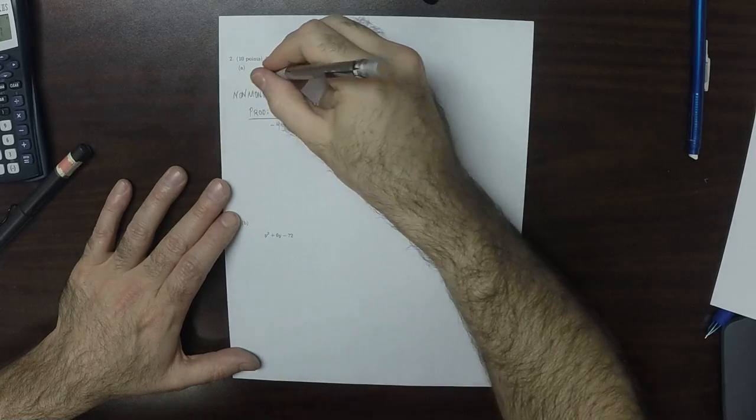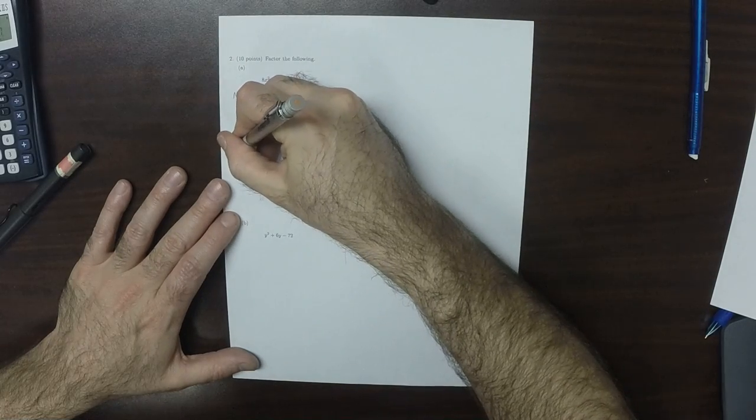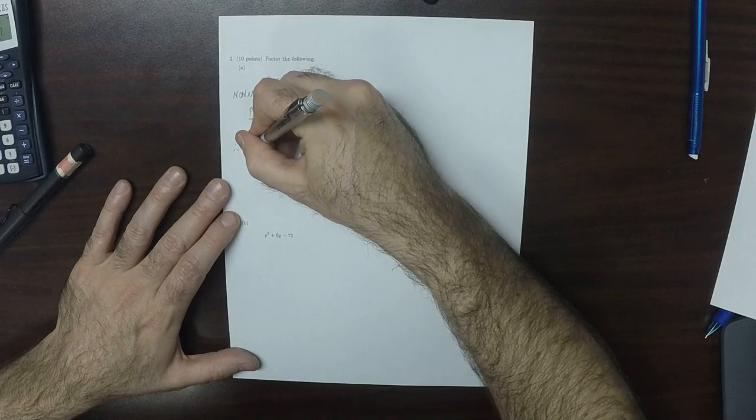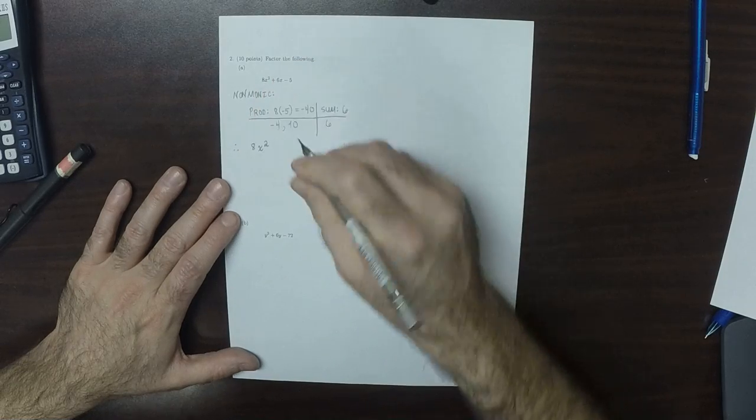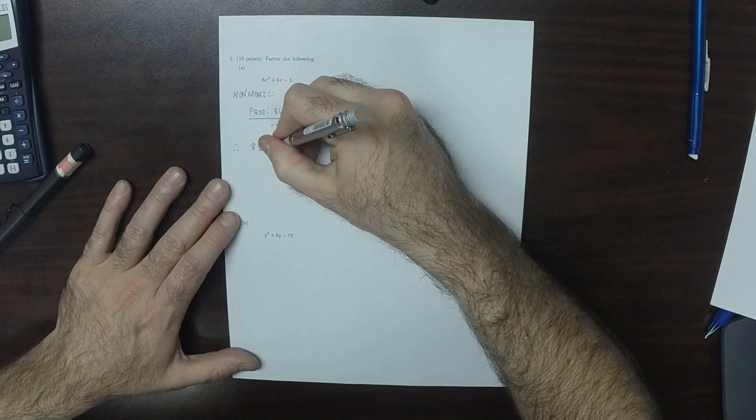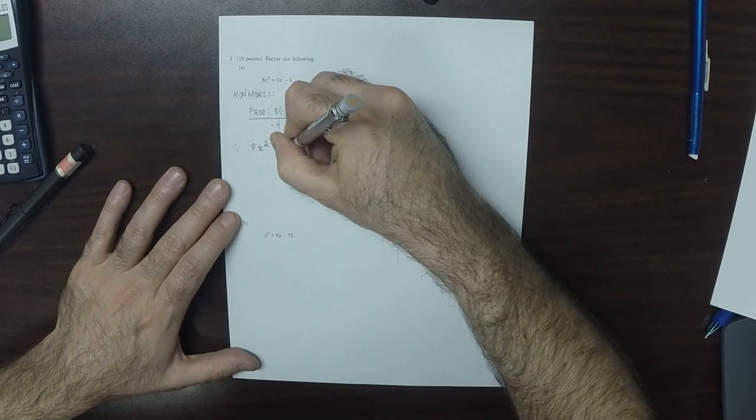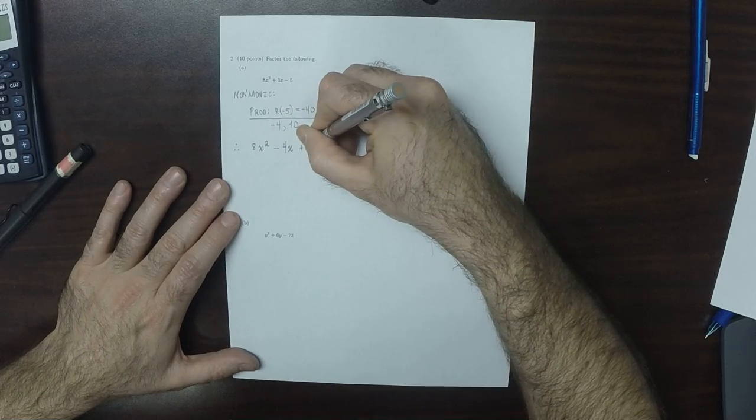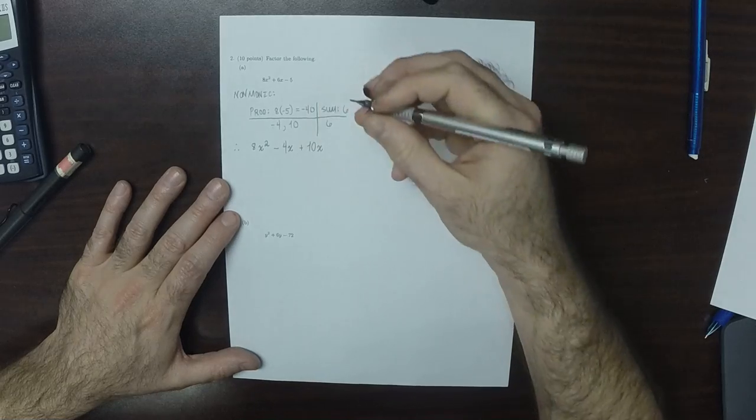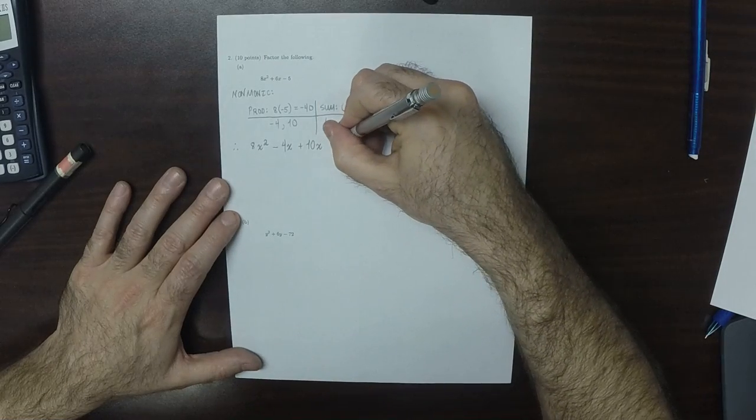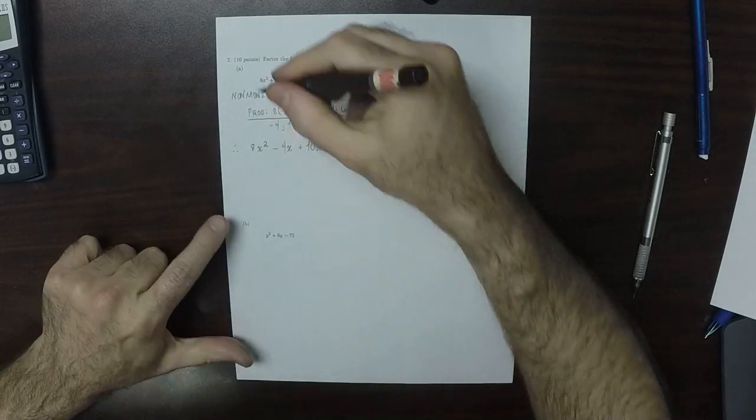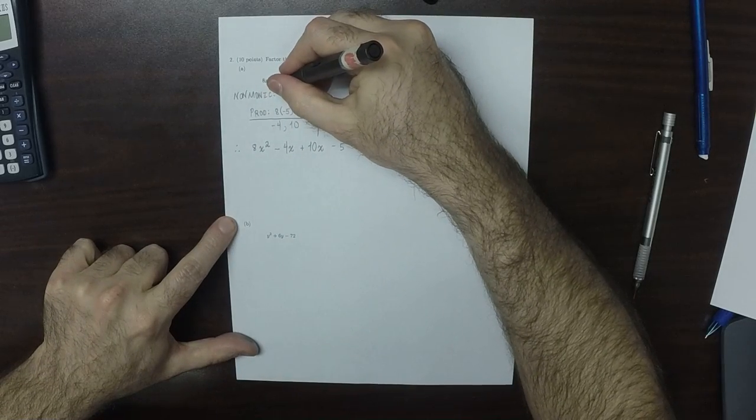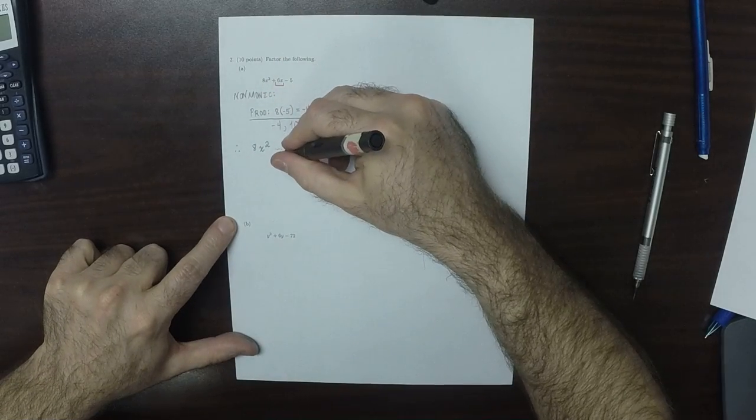So that means we're going to take the original quadratic, 8x squared, and we're going to split the middle term as minus 4x plus 10x and then minus 5. So we split this middle term into this.